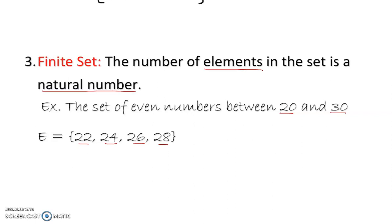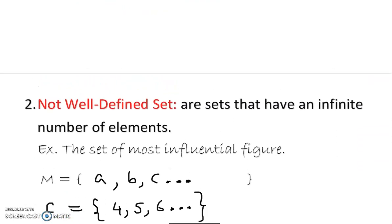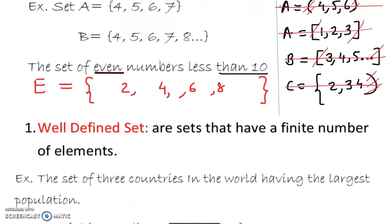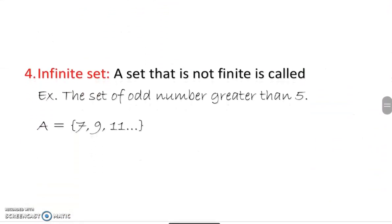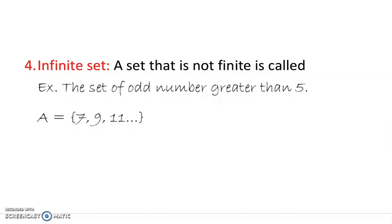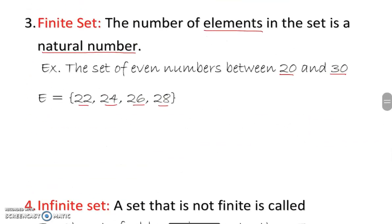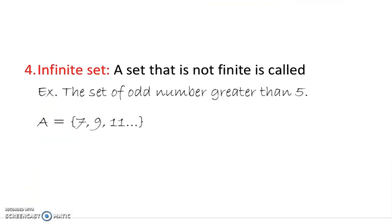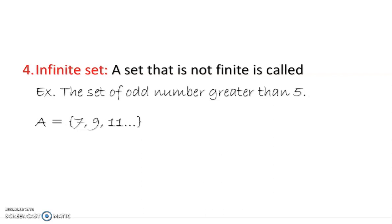To summarize what we've learned: we have finite sets, not well-defined sets, well-defined sets, and infinite sets. An infinite set is a set that is not finite — it never ends. For example, 'the set of odd numbers greater than 5.' We don't include 5, so the set is {7, 9, 11, 13, ...} — and on it goes. This is an infinite set.